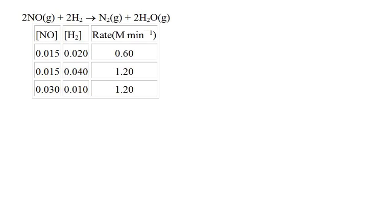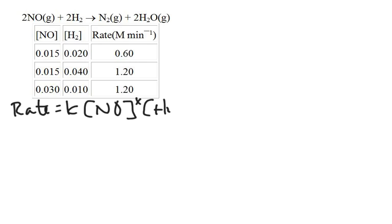Let's try another, simpler-looking problem. Again I have NO and H₂, so I write my rate law: rate equals K times [NO]^x times [H₂]^y. Looking at two experiments where [NO] is the same, [H₂] has doubled, and the rate has also doubled — I can determine by inspection that if the concentration of H₂ doubled and the rate doubled, then Y must be 1. So I already know this will be first order with respect to H₂.